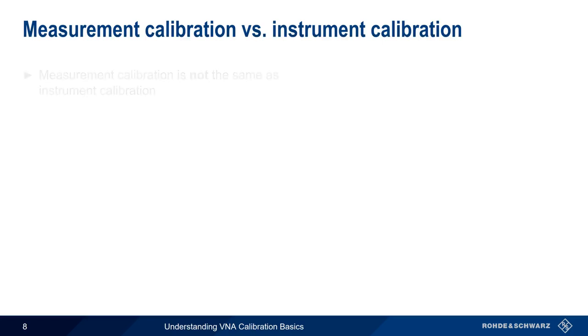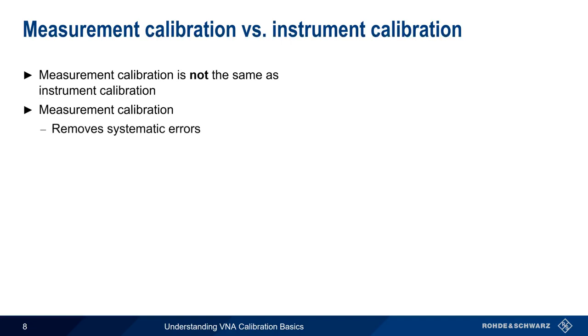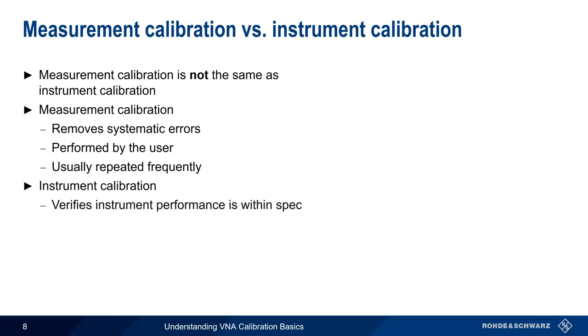It's important not to confuse measurement calibration with instrument calibration. A measurement calibration removes systematic errors in VNA measurements. It's performed by the user and is repeated rather frequently, often before each measurement session or at least before important measurements. Instrument calibration, on the other hand, is used to verify that the instrument is functioning within specifications. For example, that a generator is really outputting minus 10 dBm of power when output power is set to minus 10 dBm. Instrument calibration is performed by a service or calibration center, not by the user, and instruments are usually calibrated on a fixed time cycle, commonly every few years.